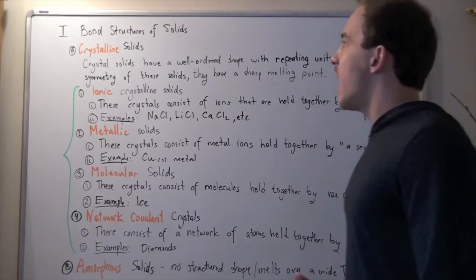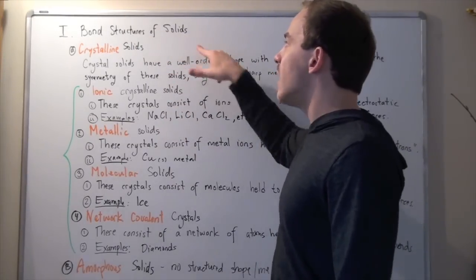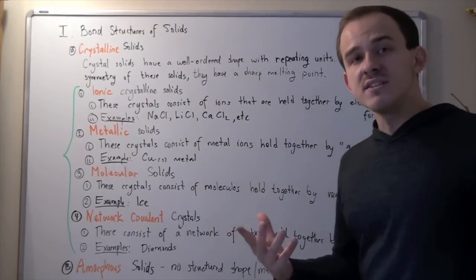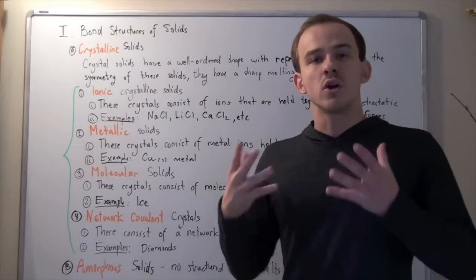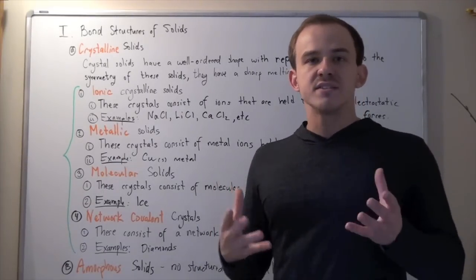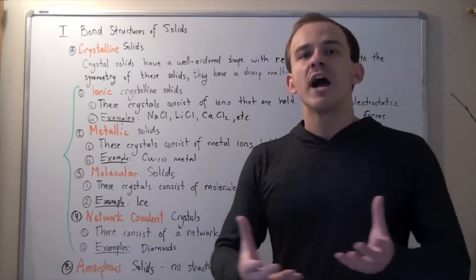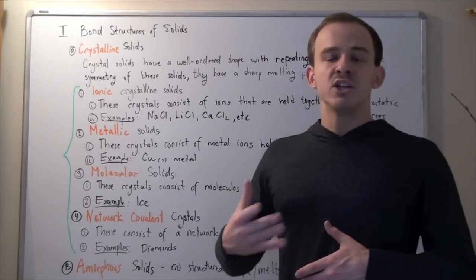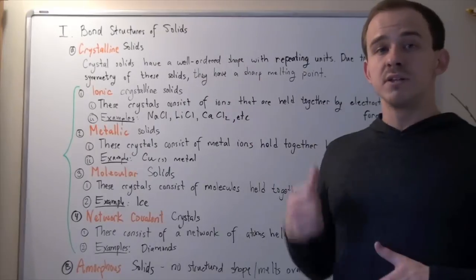Let's look at the second type of solid structure, known as amorphous solids. These don't have a well-structured shape, and because of this, they melt over a very wide range of temperatures. Examples include some plastics and some glass.